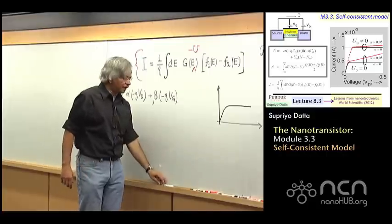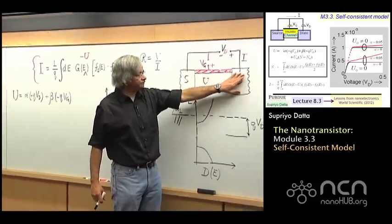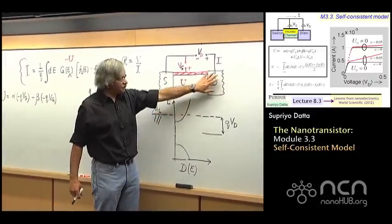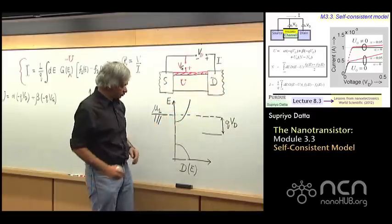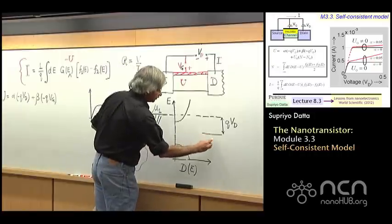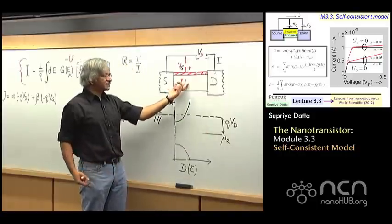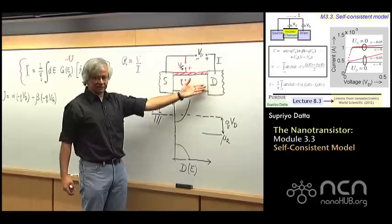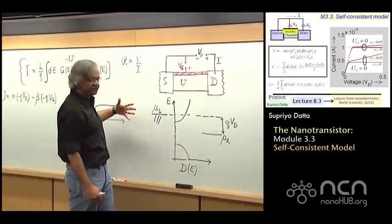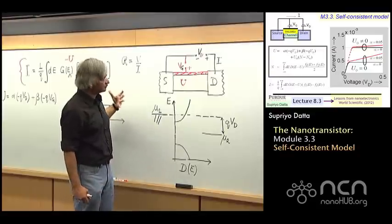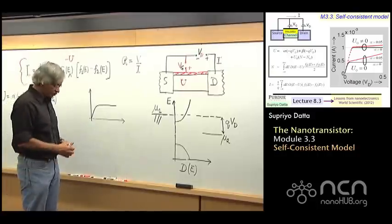This accounts for the fact that when you apply a voltage on the drain, everything in the drain is shifted according to that potential. But the channel itself also gets somewhat shifted by that potential. And this drain-induced lowering of the channel potential needs to be taken into account in the models in order to get reasonable current voltage characteristics, meaning what you actually see in experiments.